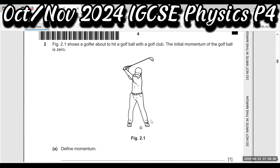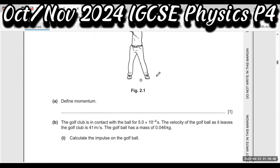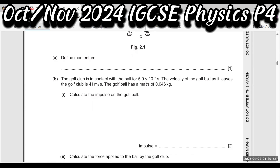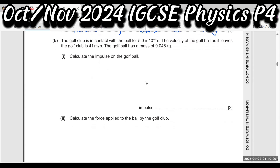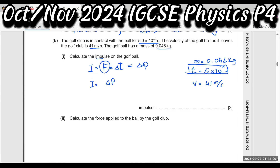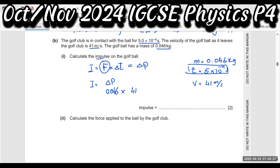Figure 2.1 shows a golfer hitting a golf ball with a golf club. The initial momentum of the golf ball is zero because it is at rest. Momentum is the product of mass and velocity. The golf club is in contact with the ball for a very short time — that is called impulse. Impulse equals change in momentum. Final momentum minus initial momentum: mass is 0.046 kg times velocity 41 m/s, giving 1.9 Ns.